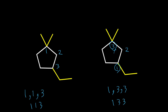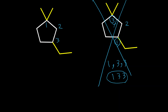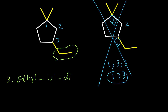So in this compound we are not going to use alphabetical order because we can make a decision based on number — it is not like the last example. When we write the name we always follow alphabetical order, so we write 3-ethyl first, then 1,1-dimethyl, then the name of the ring: 3-ethyl-1,1-dimethylcyclopentane.